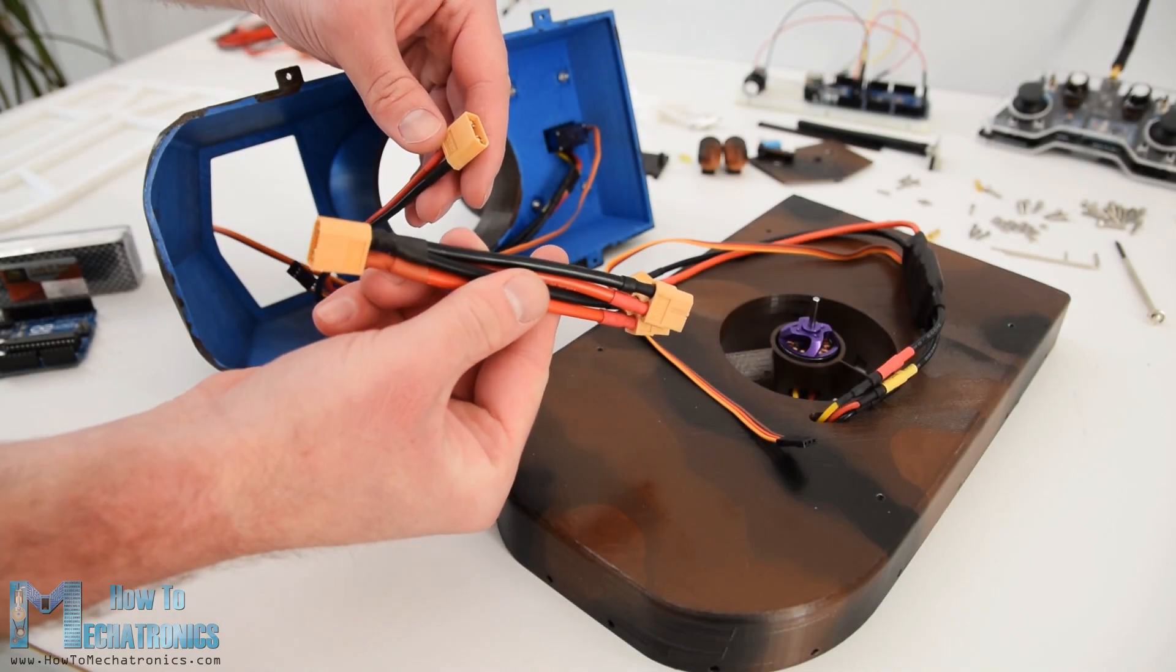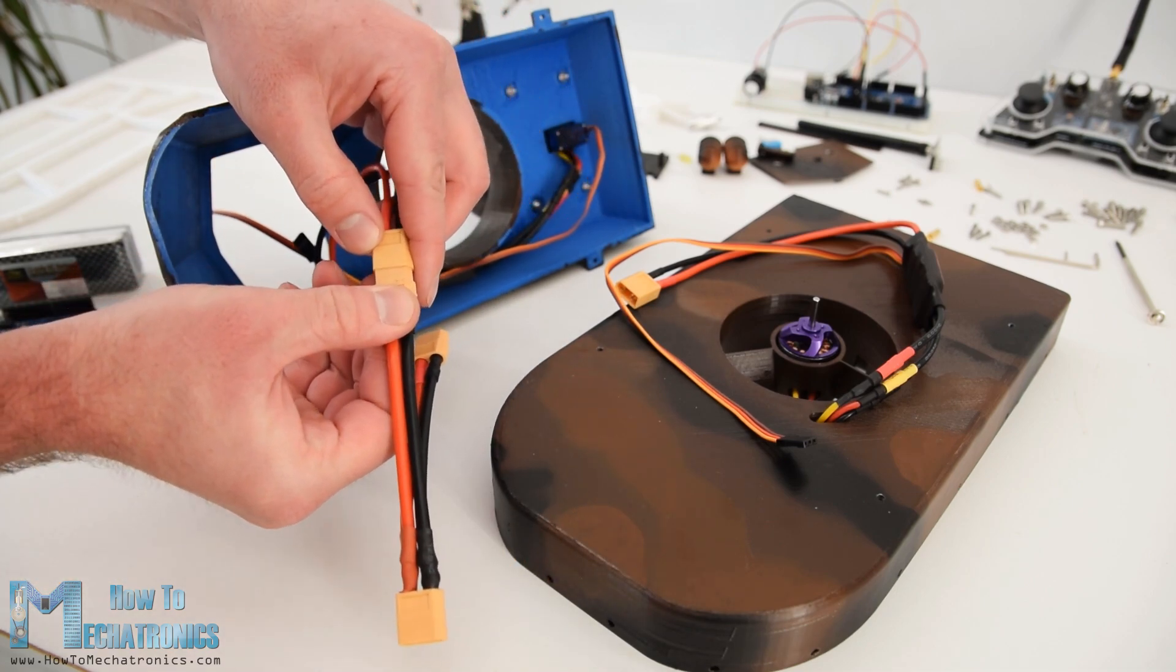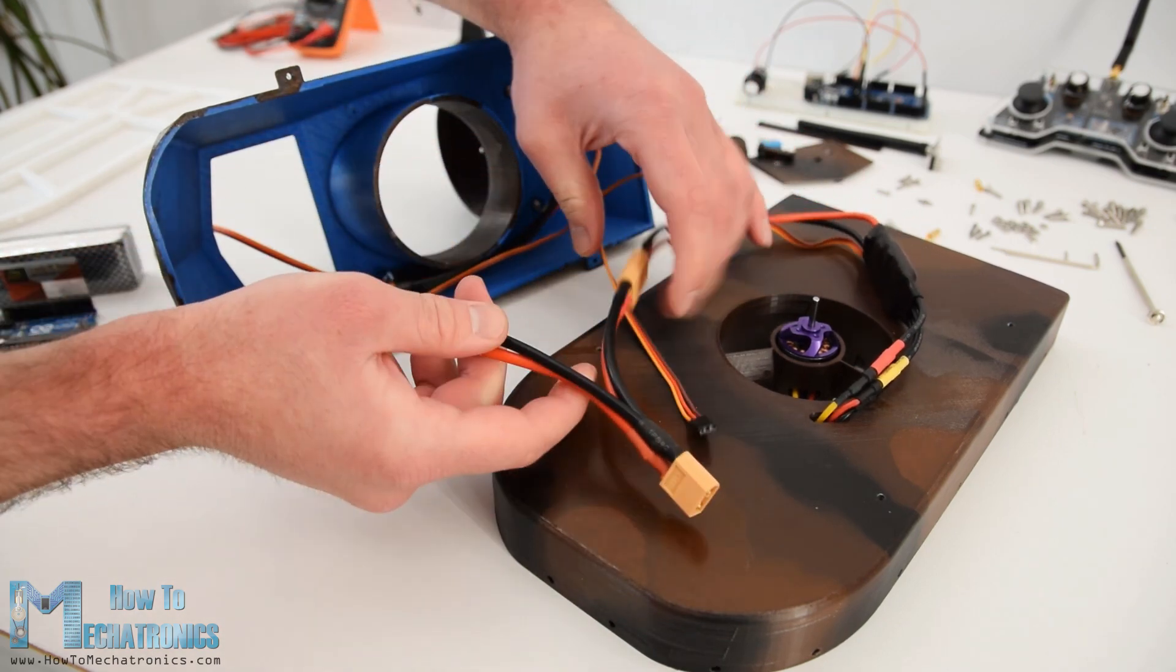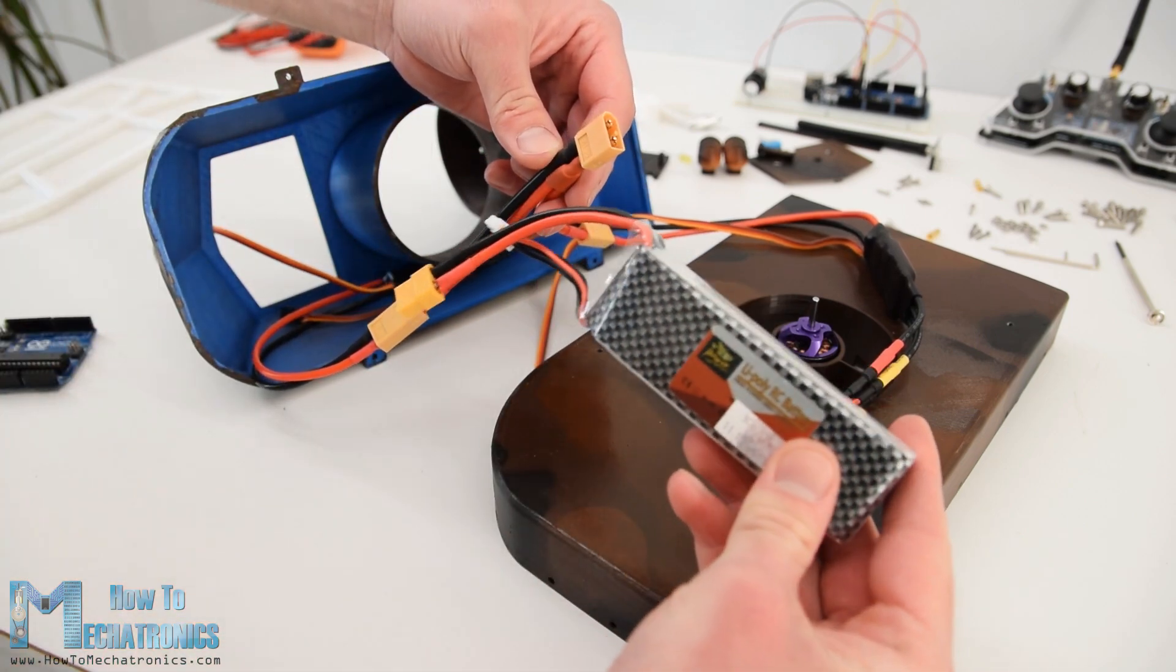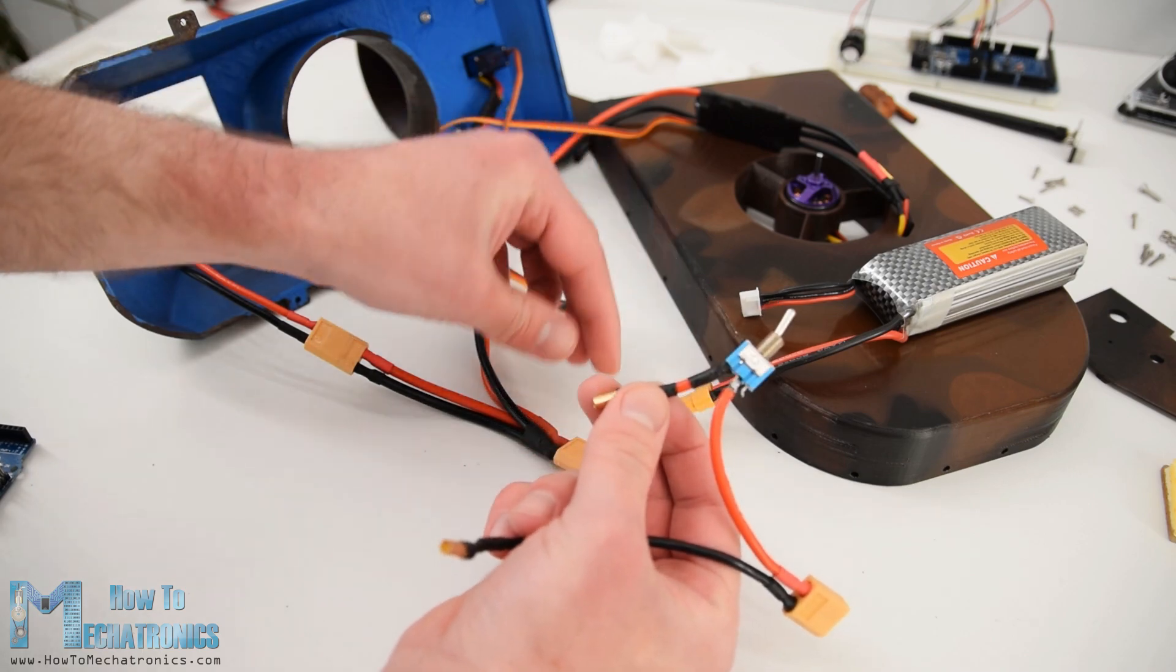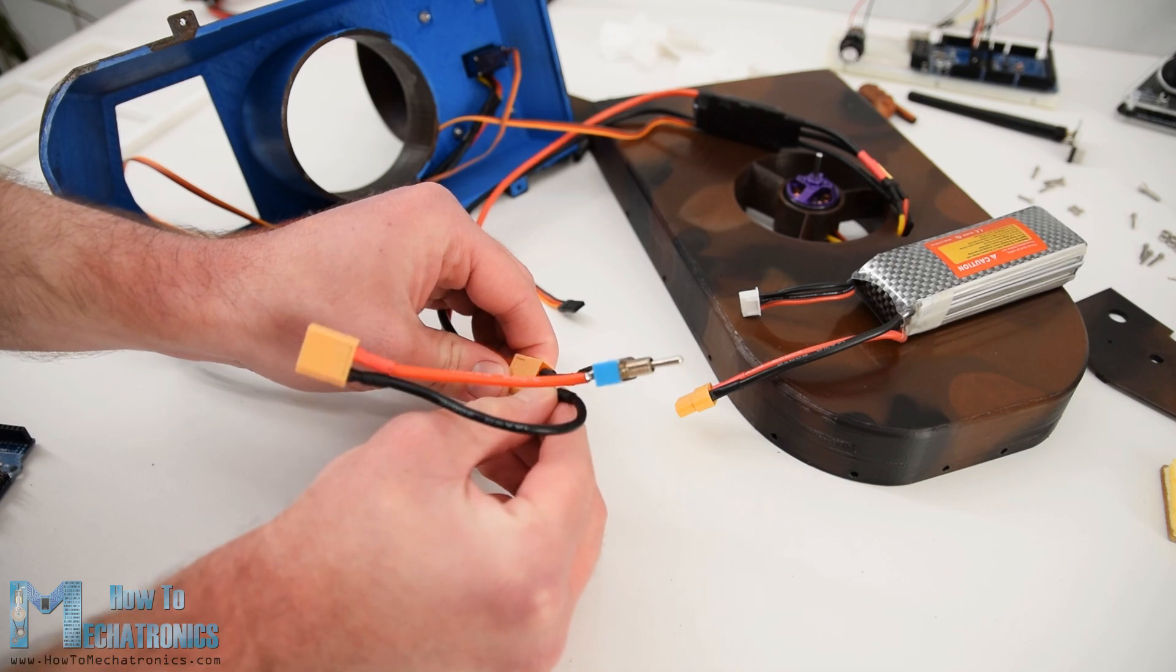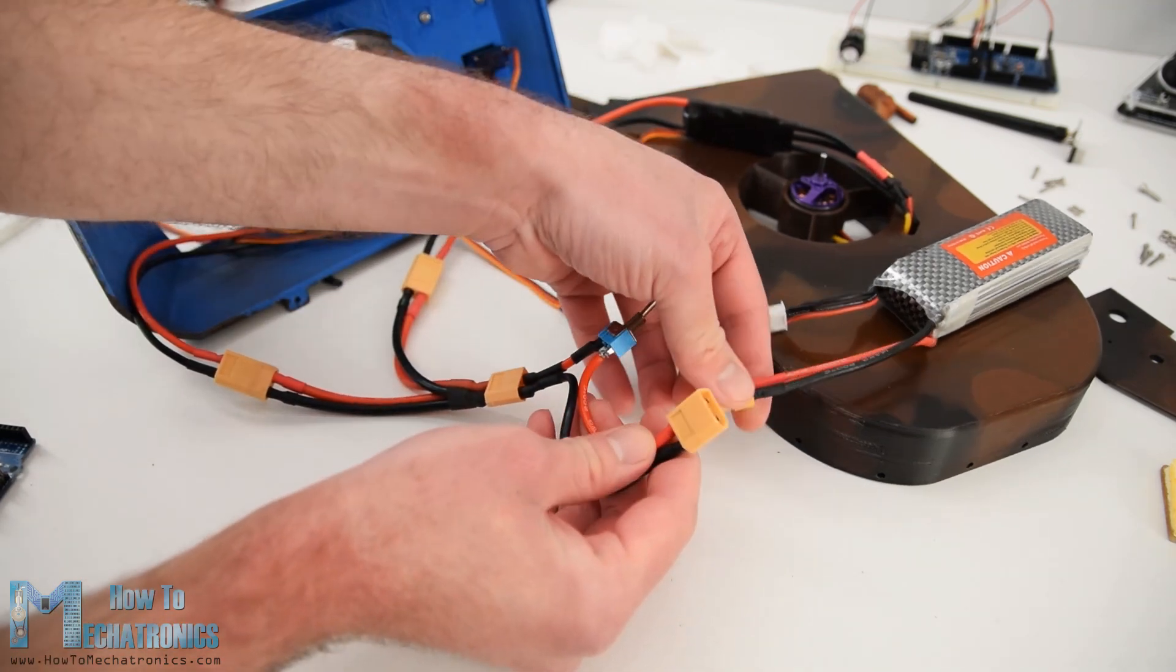So I started connecting the components as explained. For connecting the two ESCs to a single battery I used a parallel battery connector splitter type XT60. Note that there are links to all of the components used in this project in the website article, in case you want to check them out. For adding a power switch to the project I used another XT60 connector on which I cut one wire and soldered a toggle switch there. So one side goes to the Y splitter cable and the other side goes to the battery.